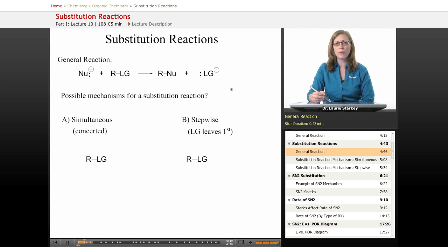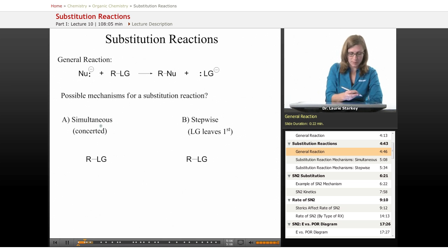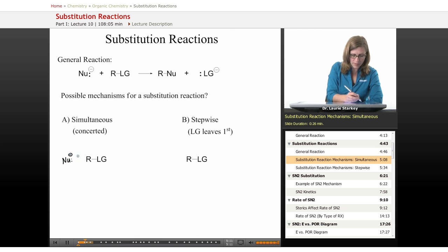If this is our general reaction, what are some things we can study about it? What if we wanted to understand the mechanism by which these starting materials get converted to these products? What are the possible mechanisms for a substitution reaction? There's really two reasonable possibilities. One possibility would be a simultaneous or concerted mechanism in which the nucleophile attacks the carbon, starts to form the bond with the carbon group at the same time as the leaving group leaves.